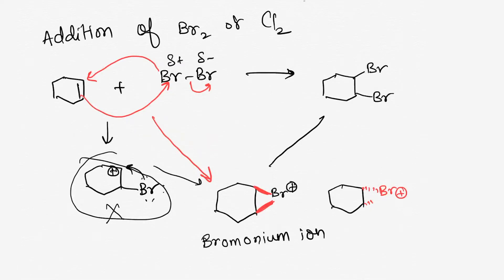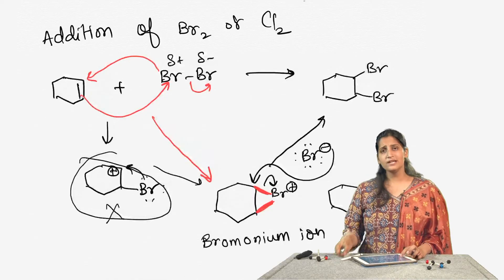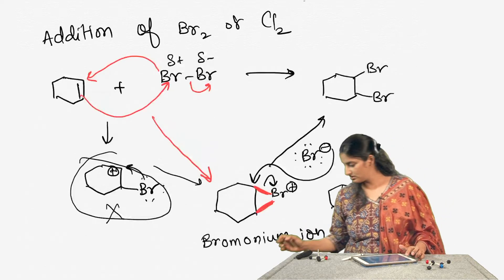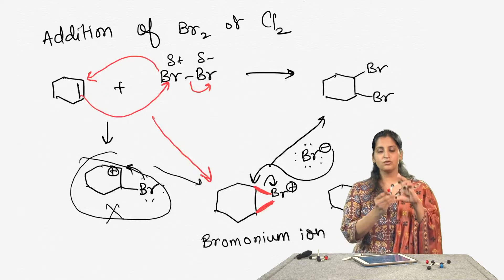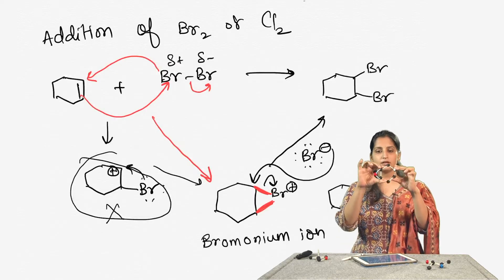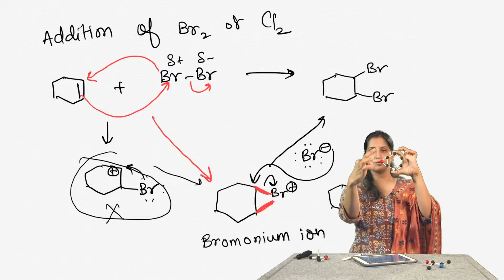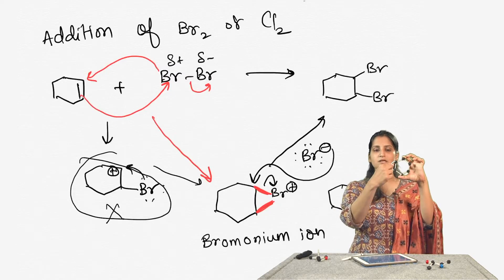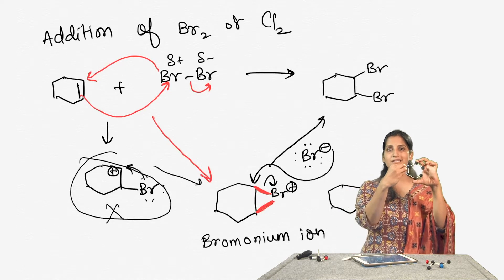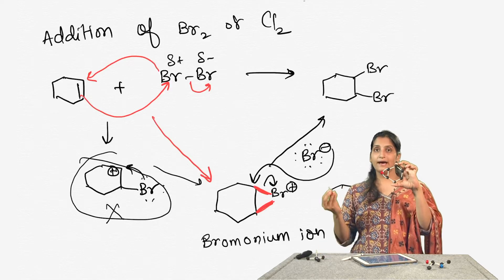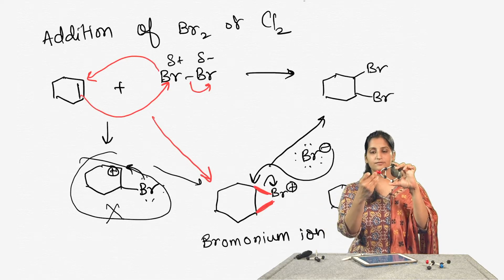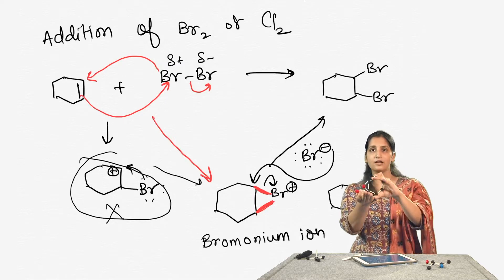In the next step, another bromide ion is going to come and attack one of the carbons and kick open the bond to form our final product. Now, looking at the models: the bromonium ion right now is such that it is coming towards you — the bromine is holding the space here. Bromine is a really bulky atom, so there is a lot of electron density around this centre. So when the bromide ion has to attack, it cannot really come from this side because there is a lot of steric hindrance — the triangle is forming towards you.